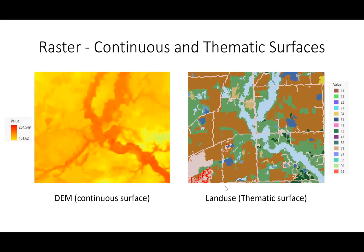Depending on what kind of information we store in a raster dataset, it can be in continuous form or discrete form, sometimes called a thematic surface. A continuous surface represents data like elevation, where values are not constant but changing — same with temperature, precipitation, or any variable that changes in space over a large spatial domain.